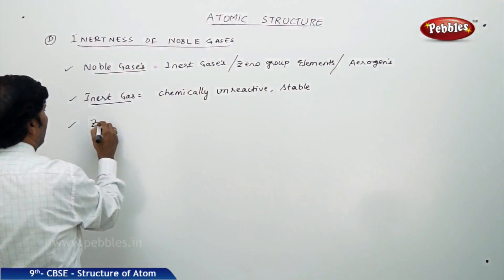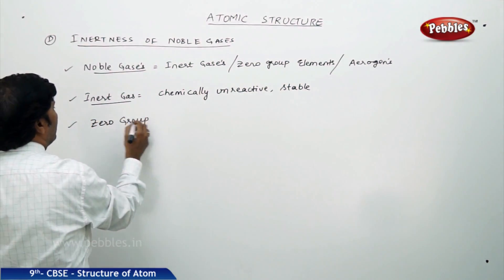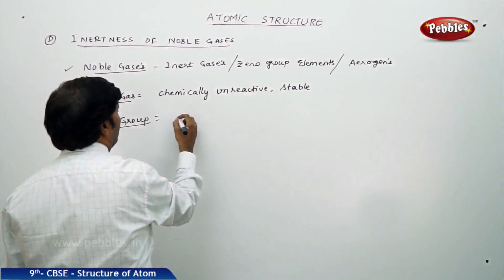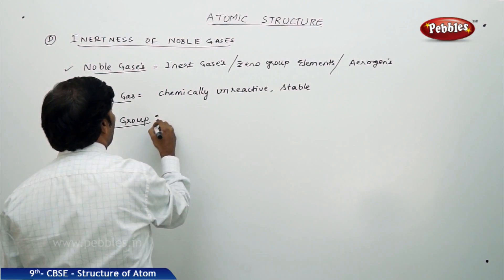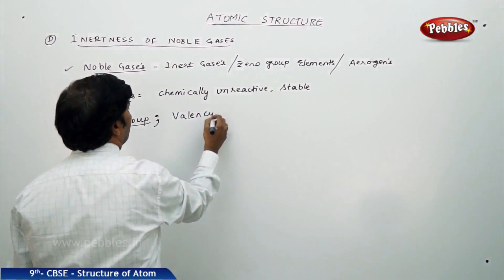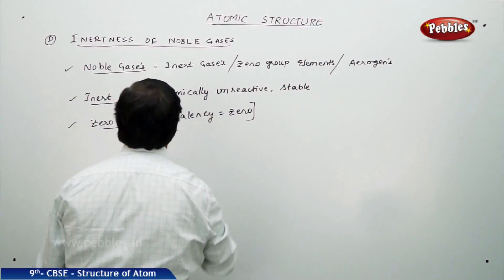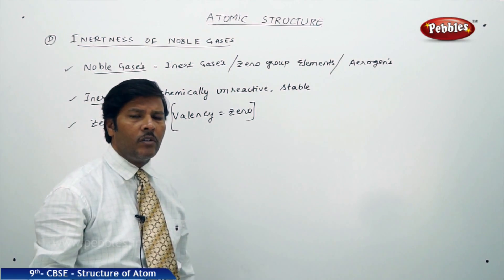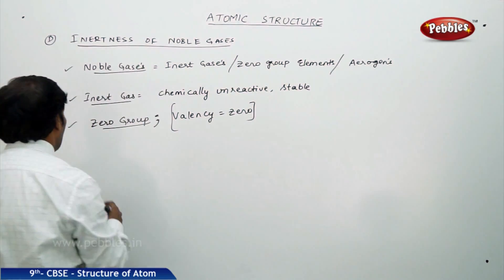Moving to zero group: all these elements are called zero group because their valency is equal to zero. Their valency is zero because neither do they lose electrons nor do they gain electrons, and that is why their valency is zero.